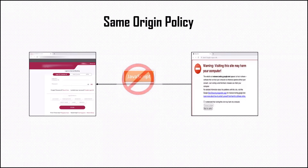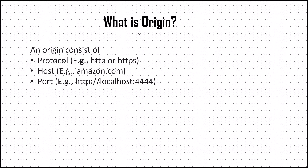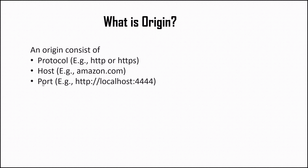Now, let's see what we mean by same origin. When we talk about origin, it contains the protocol of the web page URL, like HTTP or HTTPS. Then the host name — for example, amazon.com is the host name of the URL. And then the port number. If there is a port number present while you browse a website, it means the site is running on that specific port.